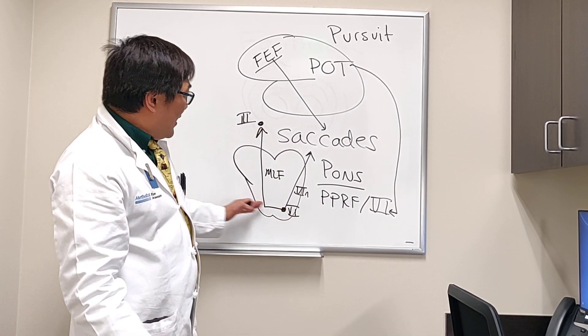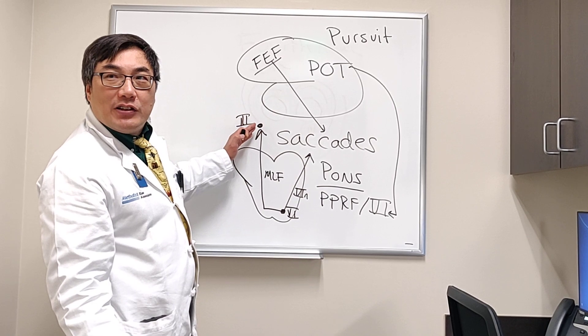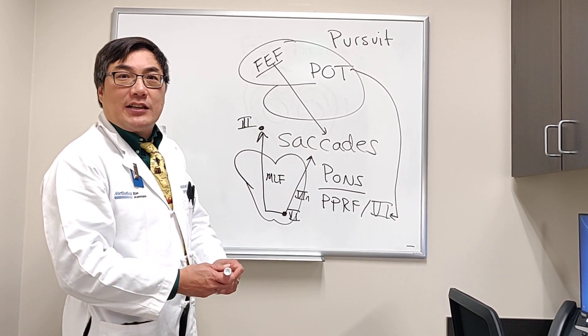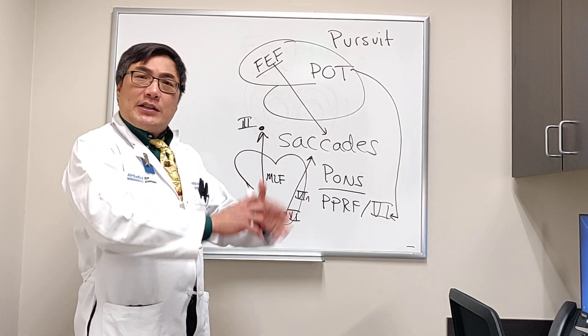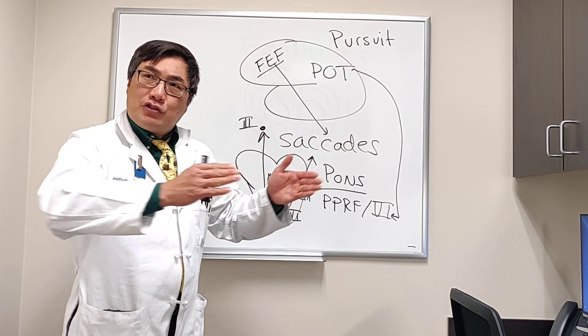The sixth nerve nucleus talks to the third nerve nucleus, via the interneuron, the medial longitudinal fasciculus, and we're off to the races. But instead of a saccade, a pursuit movement.